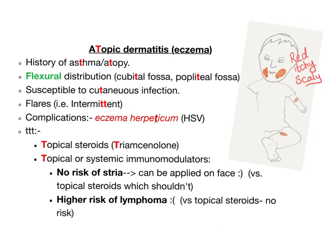The kid or infant will be susceptible to cutaneous infection. This disease comes in flares, so it's intermittent. That's the way to remember it with the T's. What are the complications of atopic dermatitis? You have eczema herpeticum.